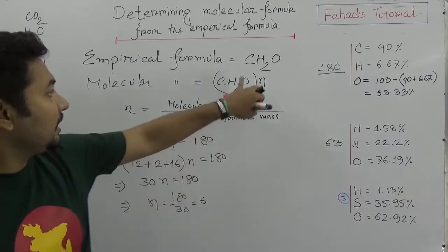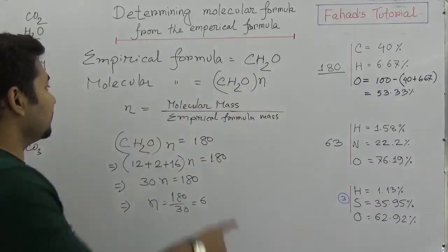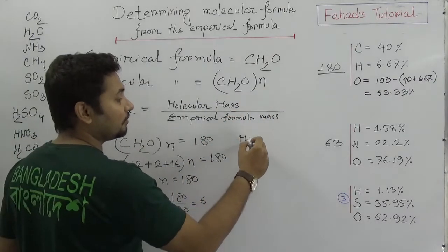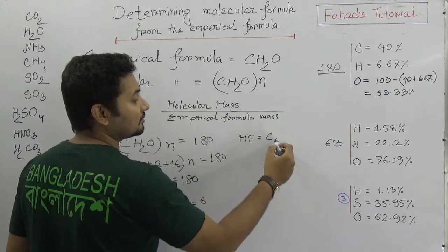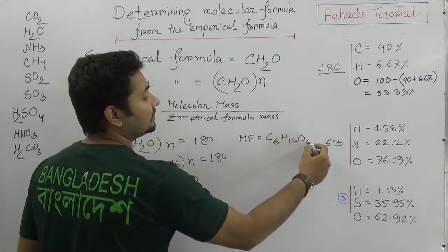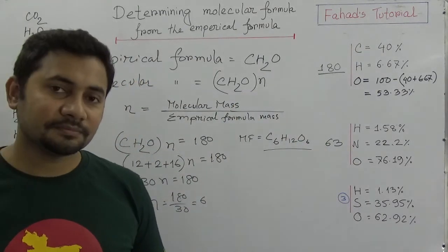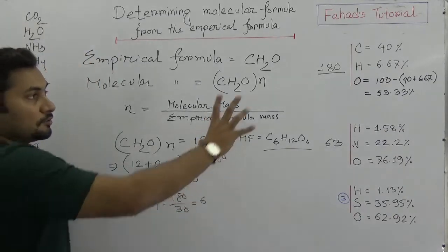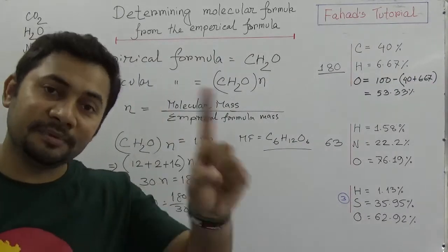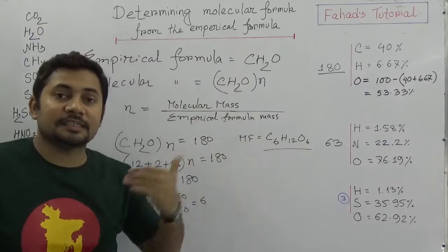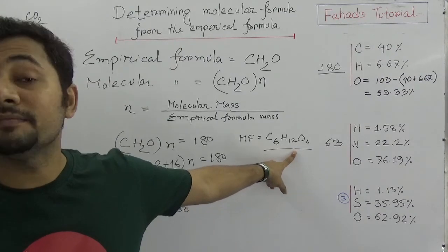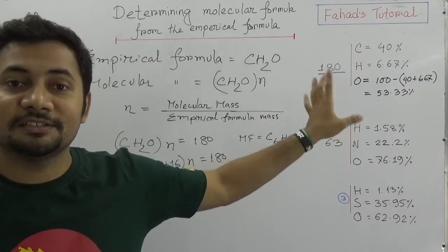So we got N = 6. With the empirical formula CH2O and N = 6, the molecular formula is C6H12O6. It is actually glucose. So from this percentage composition, I hope you can find out the empirical formula, and then this class is about determining the molecular formula from that empirical formula, according to the percentage composition given.